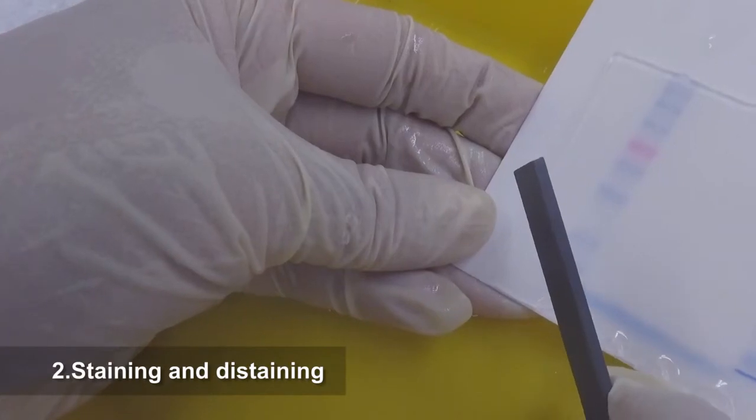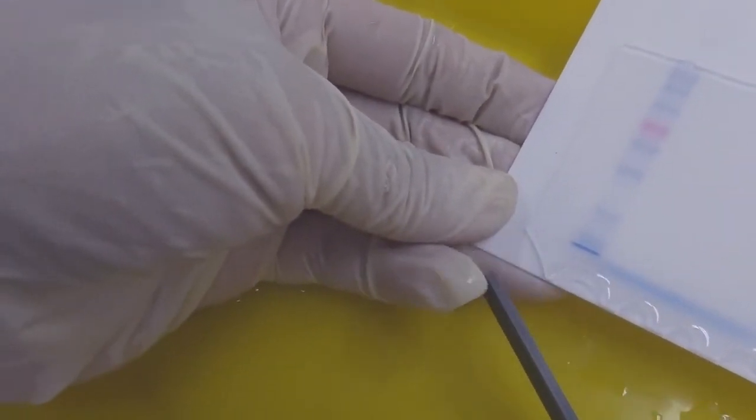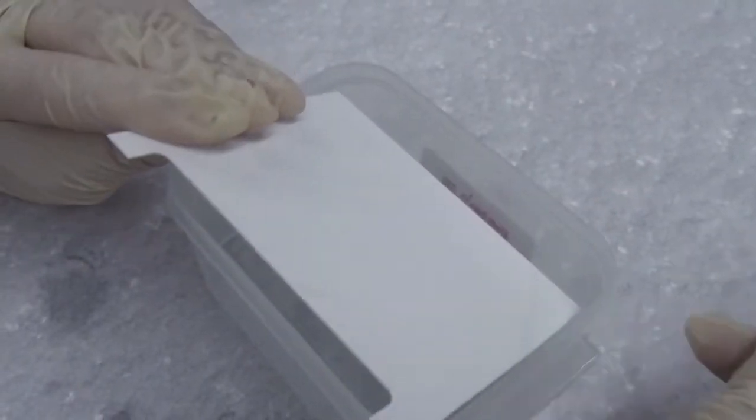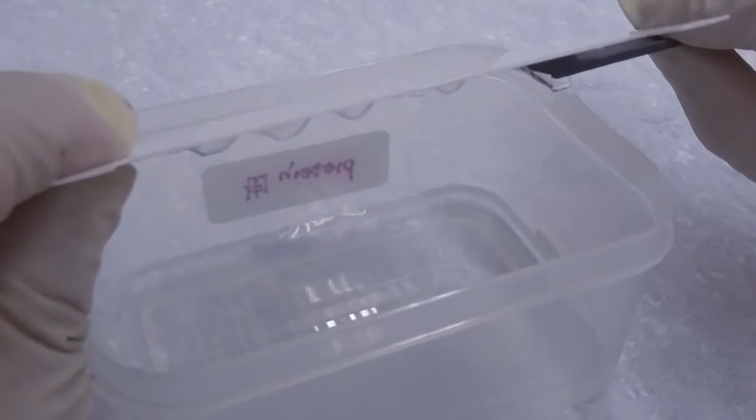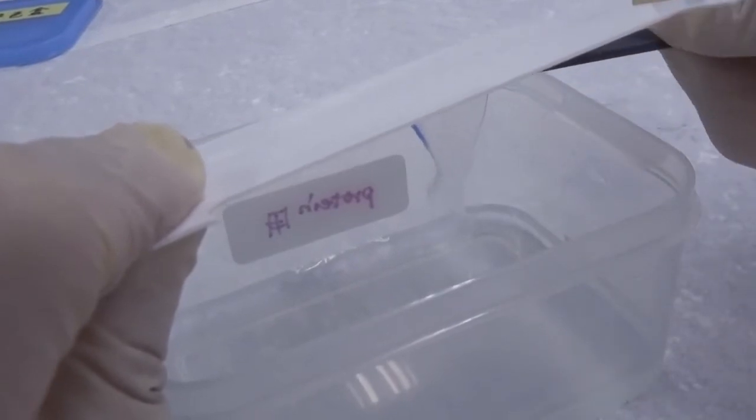2. Staining and destaining. Cut away the lower left corner of the gel as a reference of orientation. Inverse the aluminum plate so that the attached gel faces downward. Use a spacer to peel the gel down to the staining box containing 25 ml deionized water.